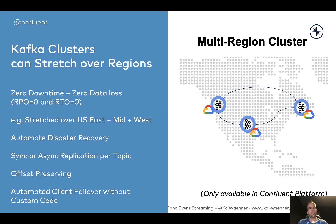With Confluent Platform you can even deploy multi-region clusters — stretching one cluster over different regions. This was battle-tested with US East, Central, and West, meaning one single Kafka cluster stretched across the US over many kilometers. This provides automated disaster recovery even if a complete data center or cloud region is down, without downtime, without data loss, and even including automated client failover without custom coding. This is really huge for mission-critical use cases.